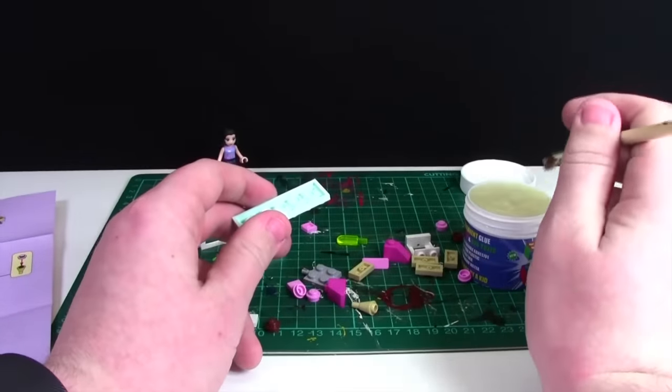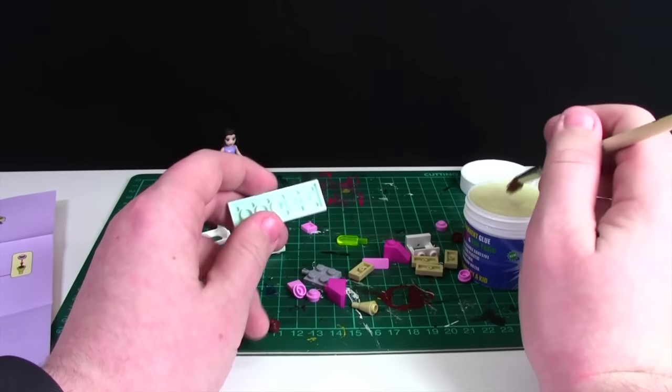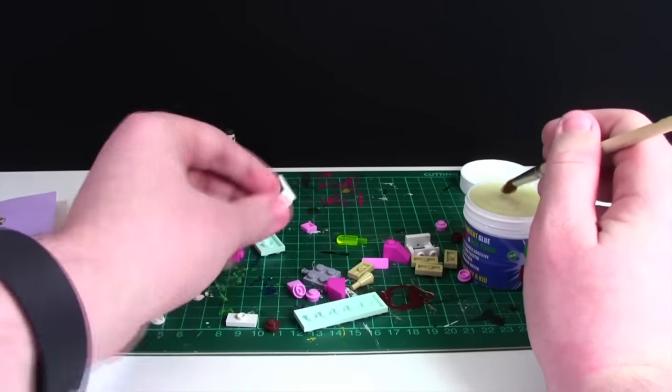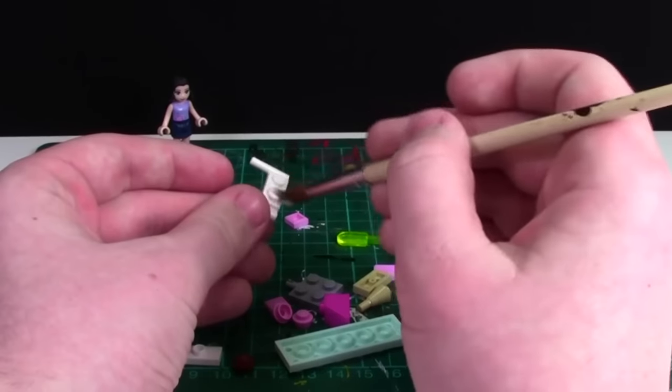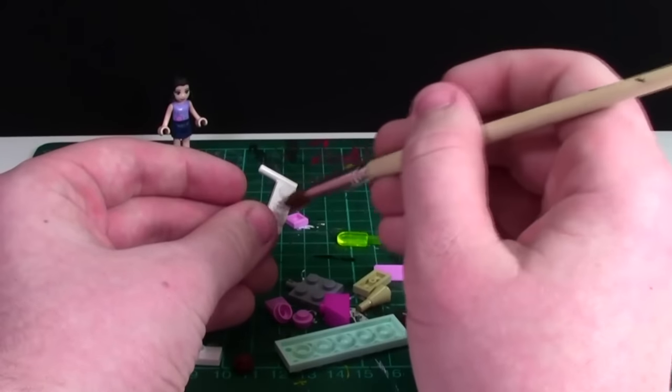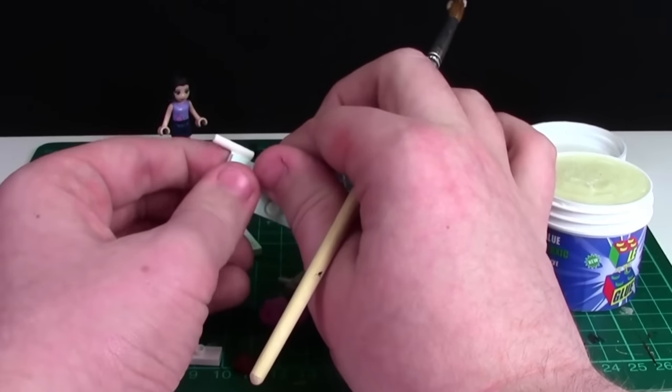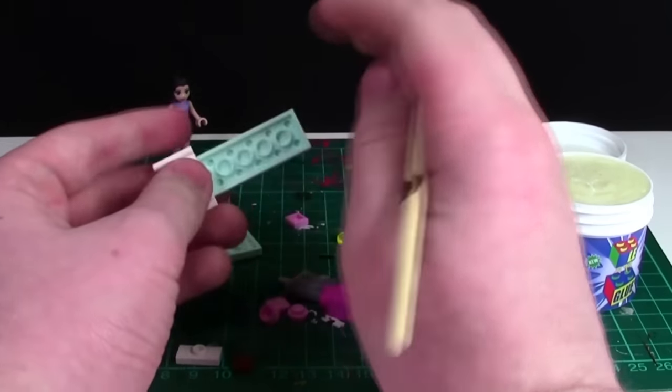In case you haven't noticed so far, it's really easy. I just dip my paintbrush in the glue here. I take the piece I'm applying and I just paint the glue on nice and gently. I don't do it too much. I try not to get too much on the side, so I do want to cover all the bricks and studs to keep the glue in place.